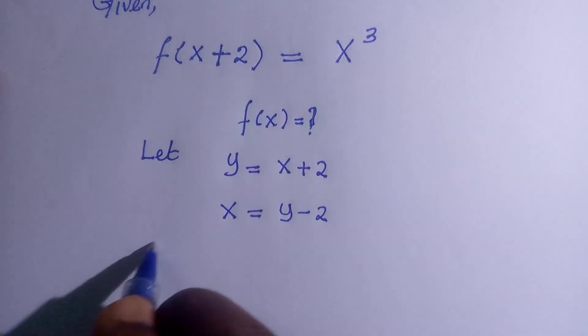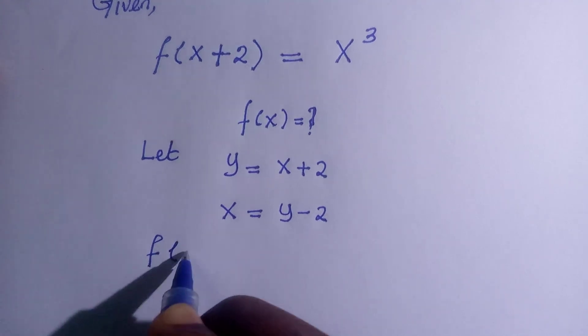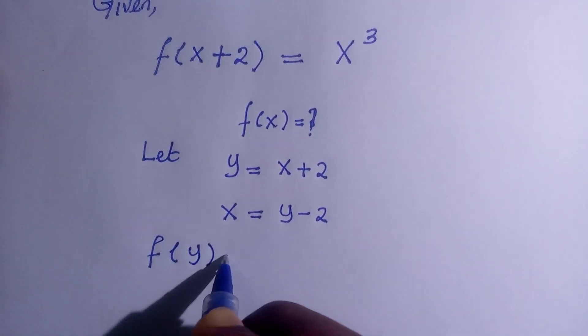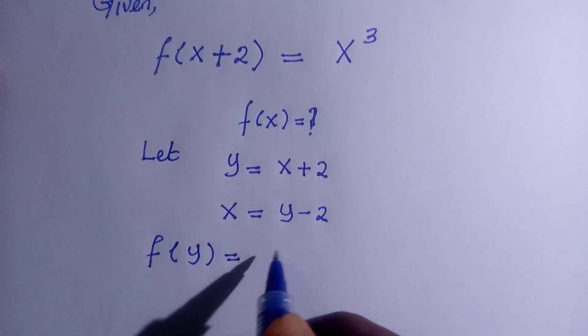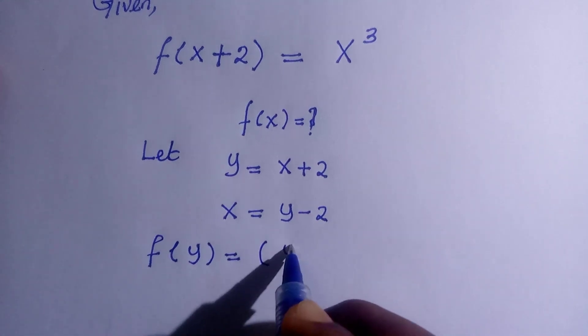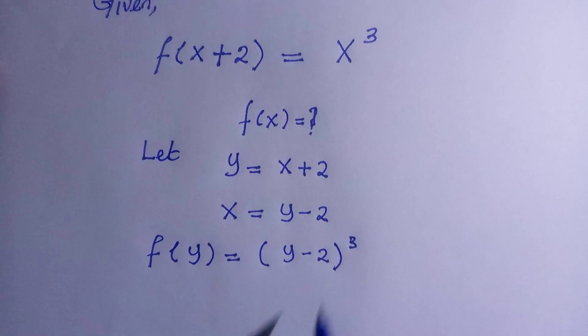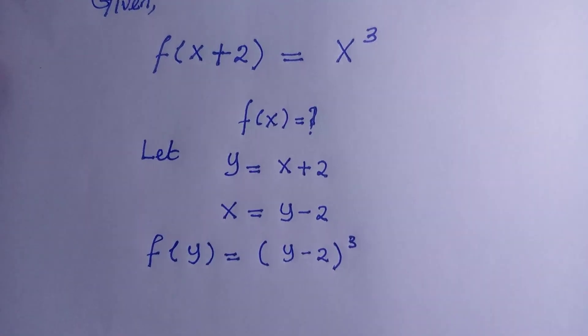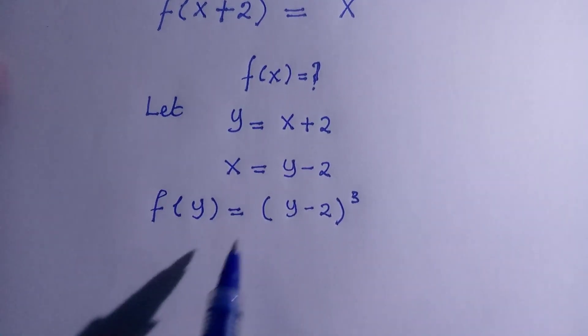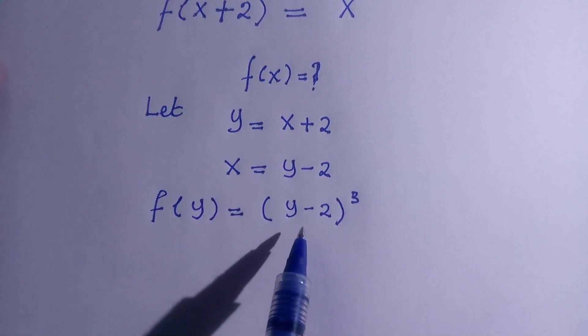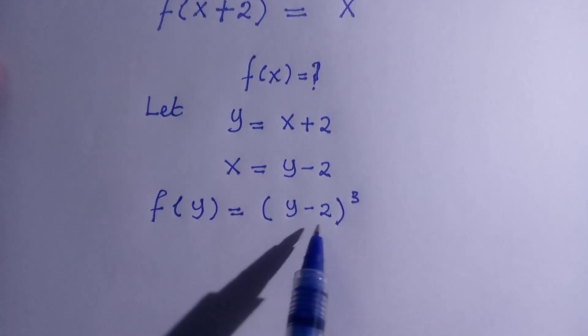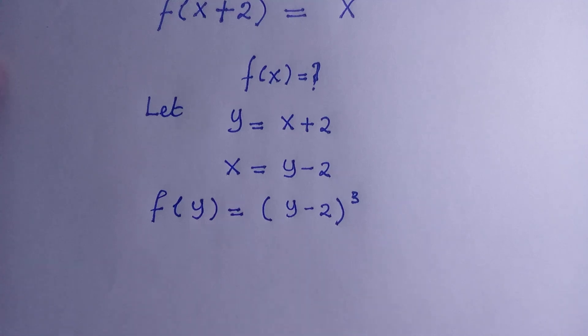So that we can have f(y) equals, so for this one which is x, we write it as y minus 2 to the power of 3. So having this, we are going to consider the expansion of y minus 2 to the power of 3 using binomial.